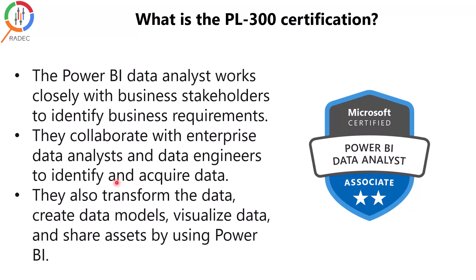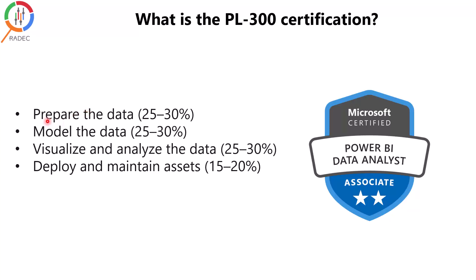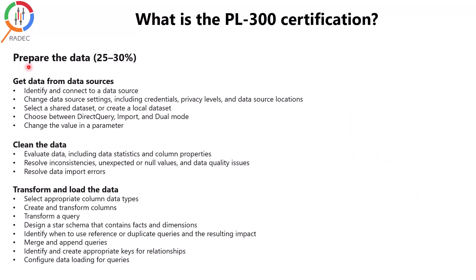The PL-300 certification exam is divided into four learning paths. The first is Prepare the Data, with a weightage of 25 to 30 percent. The second is Model the Data, also 25 to 30 percent. The third is Visualize and Analyze the Data, again 25 to 30 percent. The last learning path is Deploy and Maintain Assets, which has a weightage of 15 to 20 percent on the exam.